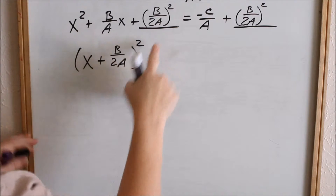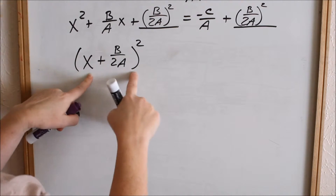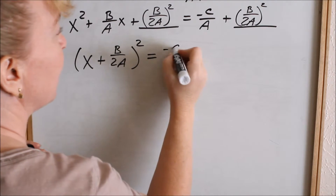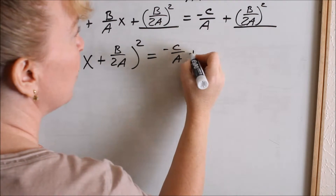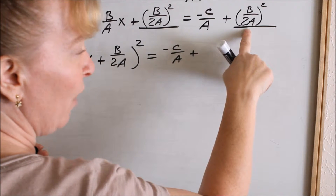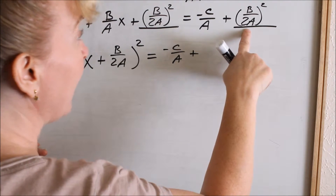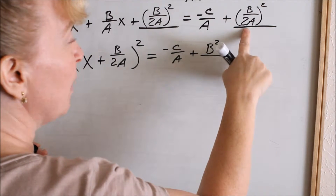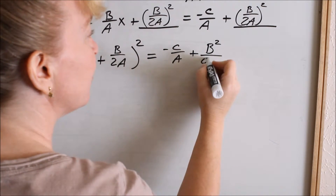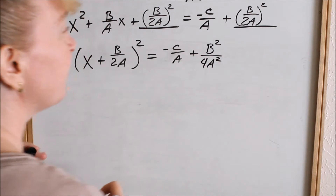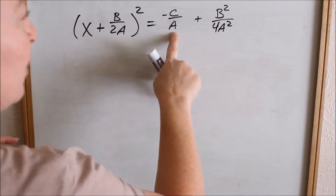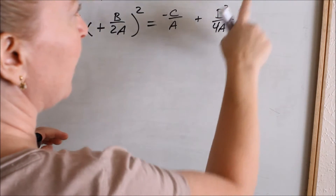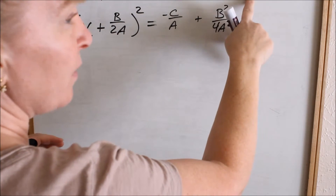I basically just took this and factored it to parentheses squared. And then on the right-hand side, we still have negative c over a plus squaring this fraction. Remember, square the numerator and square the denominator. The numerator squared would be b squared. Squaring the denominator, 2a times 2a is 4a squared.